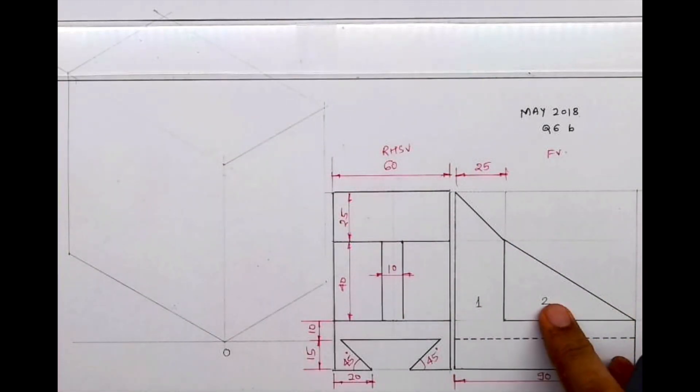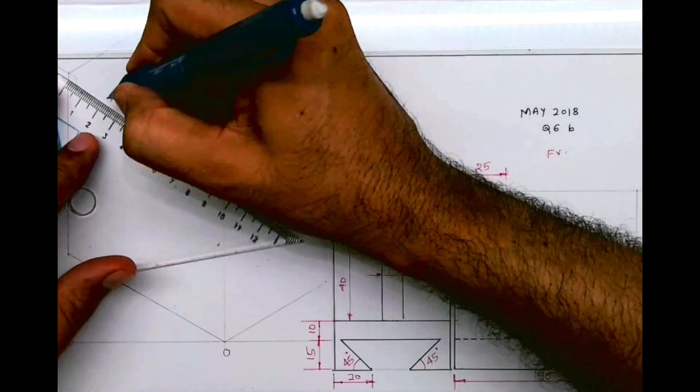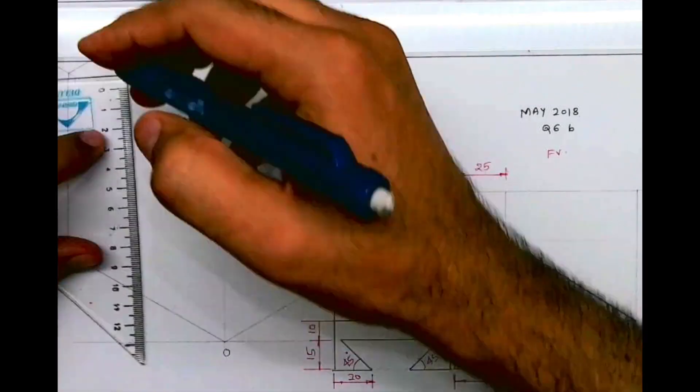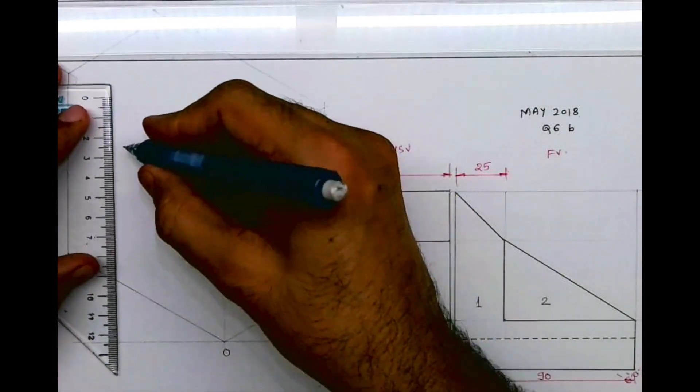So I'll draw part 1. Part 2 is behind, part 1 is ahead. So I'll mark 25, then I'll go down by 25.